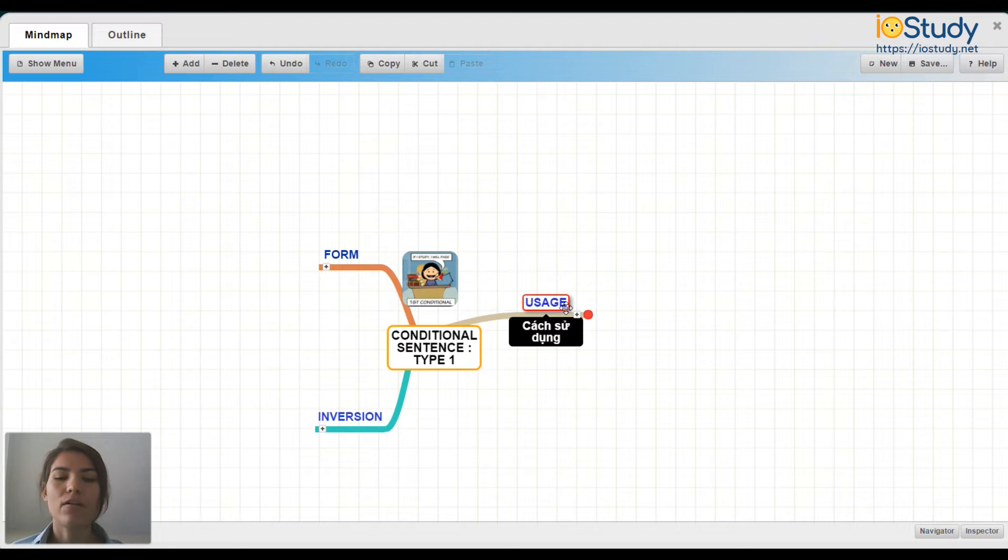Here we have the conditional sentence type 1 in the middle. We have three things to talk about: Usage, form, and inversion.